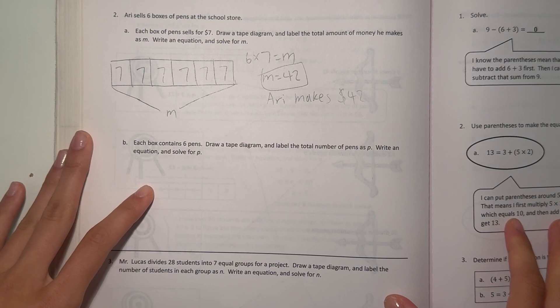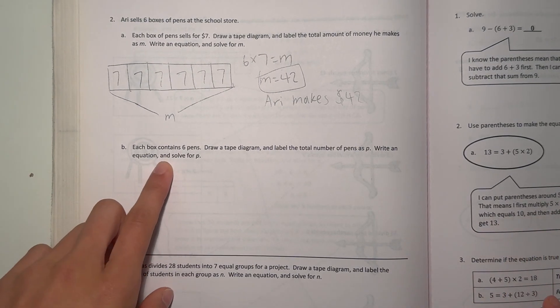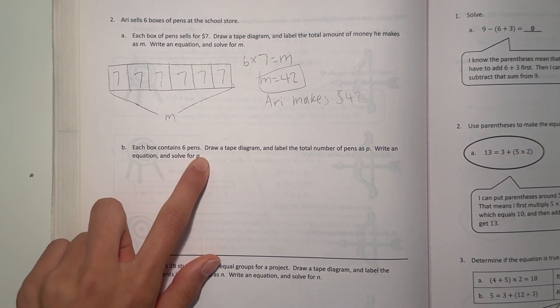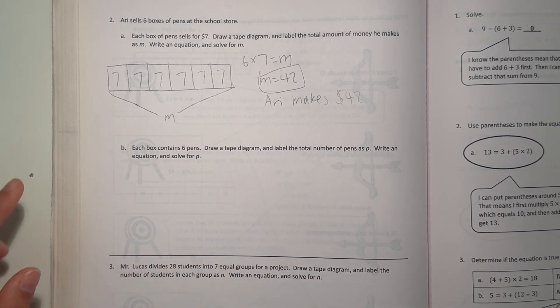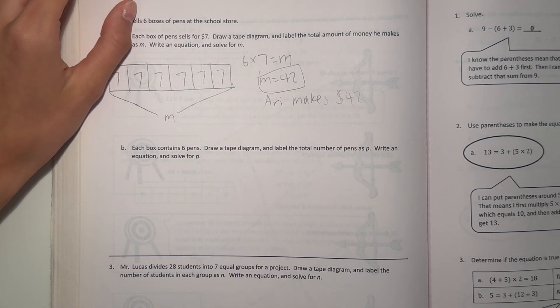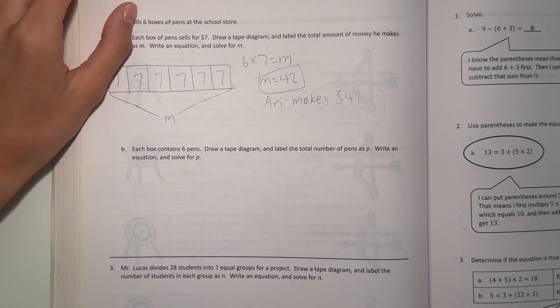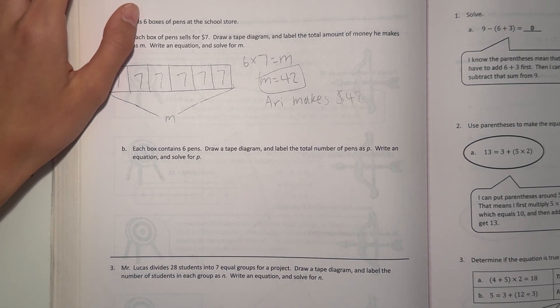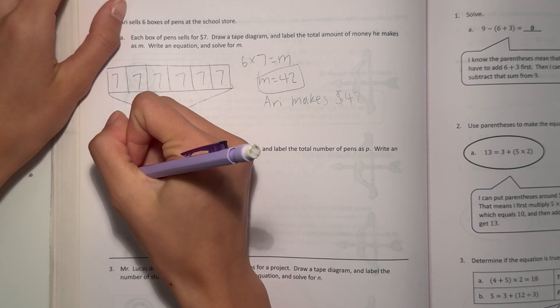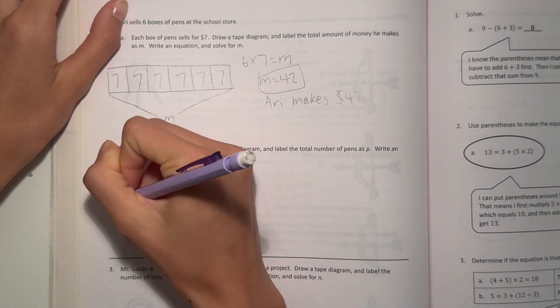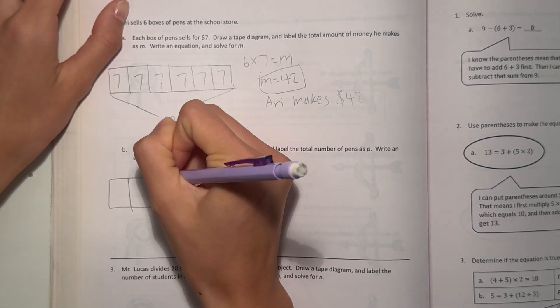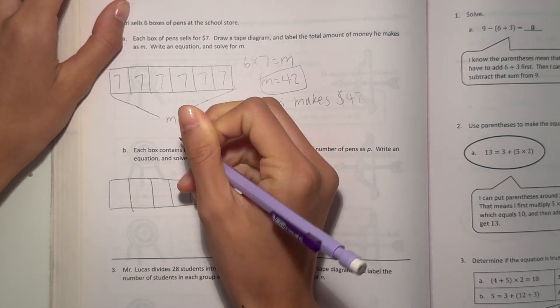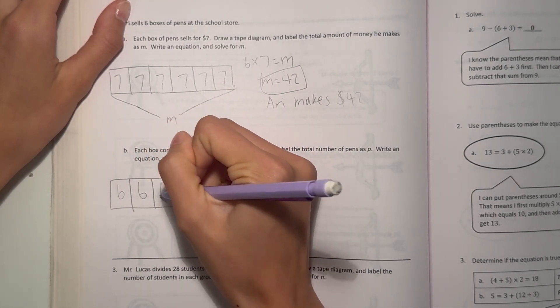Alright, and now for B. Each box contains 6 pens. Draw a tape diagram and label the total number of pens as P. Write an equation and solve for P. Alright, so 6 boxes and 6 in each box. So, 1, 2, 3, and then we have 6 in each box.